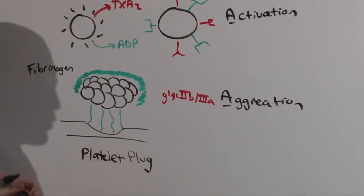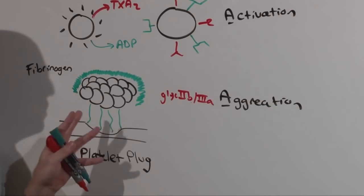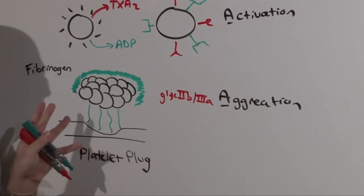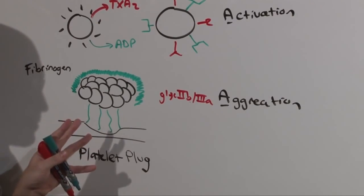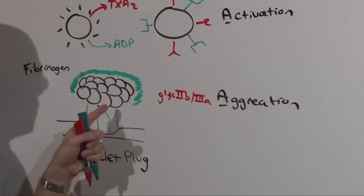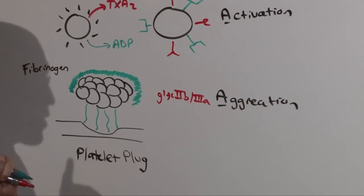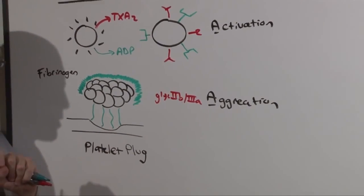This may seem overwhelming, but this is the point at which primary hemostasis ends and secondary hemostasis begins. You'll see the relevance of this platelet plug surrounded by a fibrinogen mesh in just a second after we finish talking about secondary hemostasis.